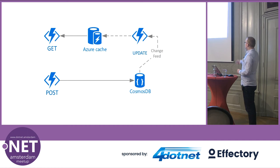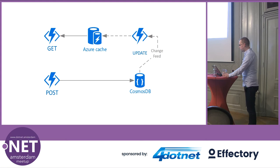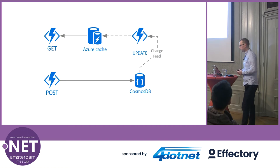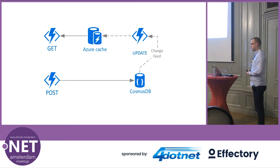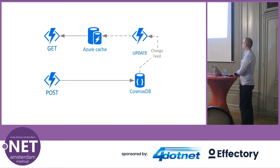To be more CQRS-like and use the Change Feed, I came up with an updated diagram. I hooked up a trigger to the Change Feed to update an Azure Cache, which is a Redis cache. The GET Azure Function will only read from this Azure Cache. There is one problem: the Azure Cache might be empty and there's no way of adding data to it automatically yet, so I'd have to create a new trigger to update the cache. That's one flaw in this design, but for the rest it's quite nice.